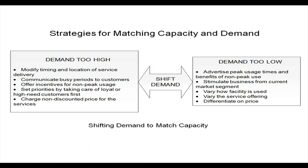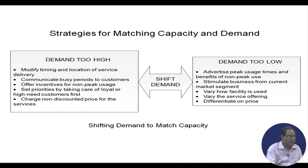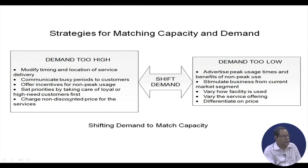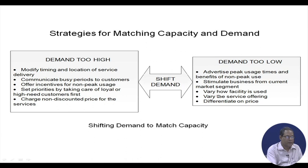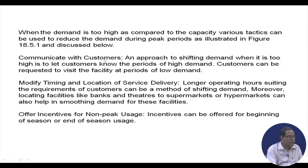When the demand is too high or too low, we have to shift the demand accordingly by modifying the timing and location of service delivery. When demand is too high, tactics include communicating busy periods to customers, offering incentives for non-peak usage, setting priorities by taking care of loyal or high-need customers first, and charging non-discounted prices for services. When the demand is too low, tactics include advertising peak usage times and benefits of non-peak use, stimulating business from current market segments, varying how the facility is used, varying the service offering, and differentiating on price.